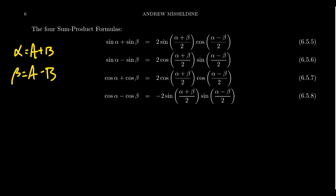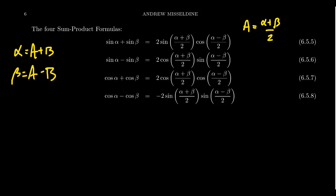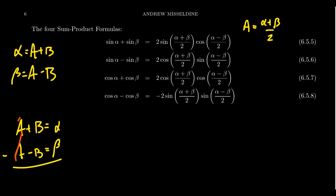If you think of this as a system of equations — a plus b equals alpha and a minus b equals beta — and you add these together, the b's cancel out and you get 2a equals alpha plus beta. This gives us that a equals (alpha plus beta) over 2. Then if we subtract the second equation from the first, the a's cancel out, the b's double up due to the double negative, giving 2b equals alpha minus beta.